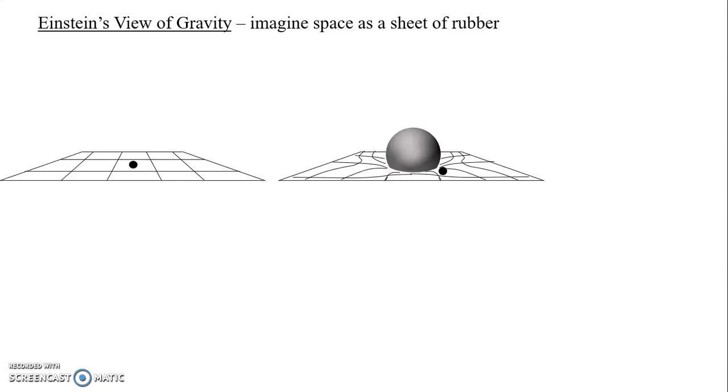Here we have a way of visualizing what masses do to space. Masses create fields. To understand the field, what that means is the object actually alters the curvature of space. Then other objects nearby, if they're moving, would follow the curvature of space, and because of their path it would seem like they're being attracted.